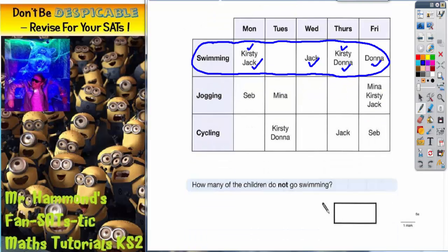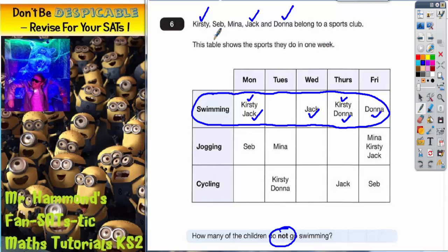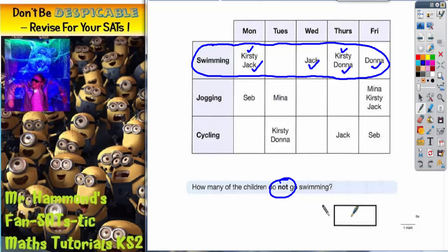Now the question says, how many of the children do not go swimming? So if we go back to our list, you can see that Seb and Mina are the children that do not go. And that's two people. It's really important here to realize that it is saying how many. So we're looking for a number as the answer. We're not looking for the names of the children. So it's two people.